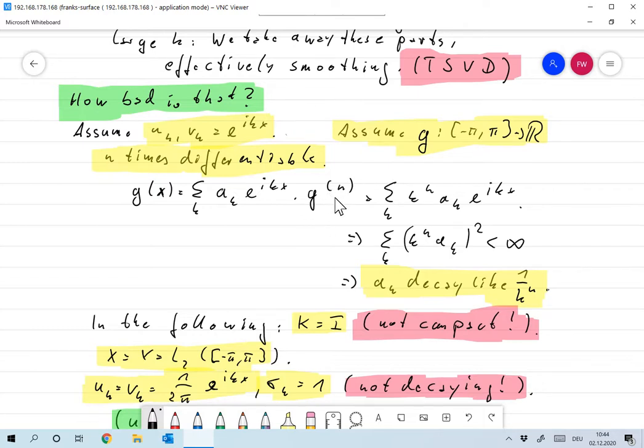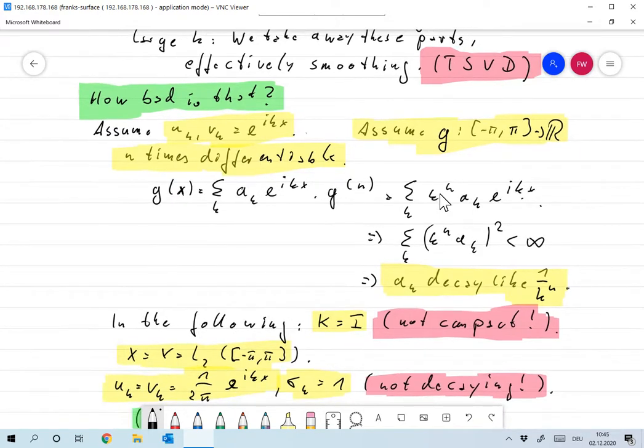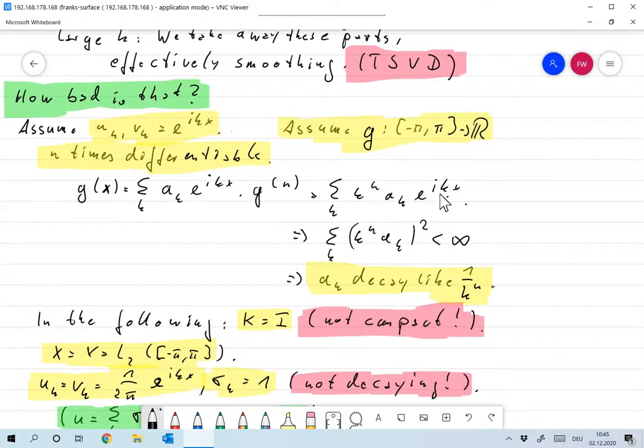Then the nth derivative is given by sum over all k, k to the n a k i to the n e to the i kx. Taking the nth derivative means that the square of the coefficient is summable.